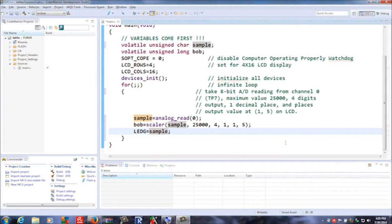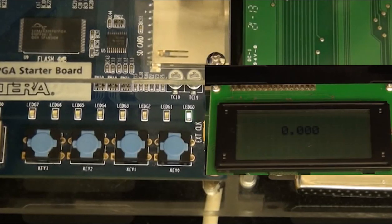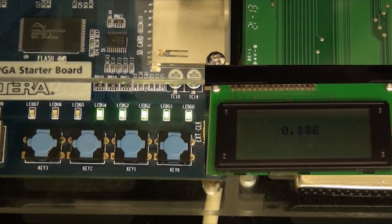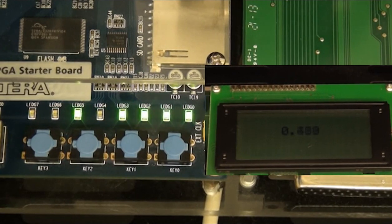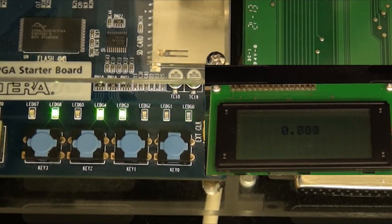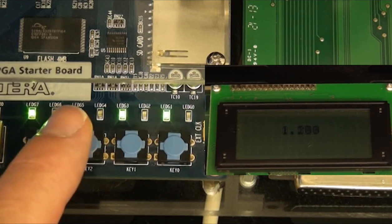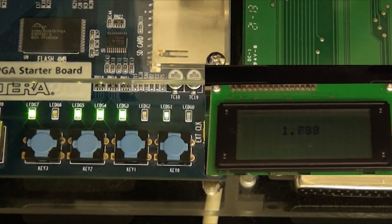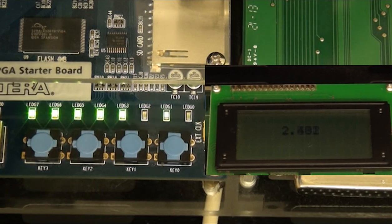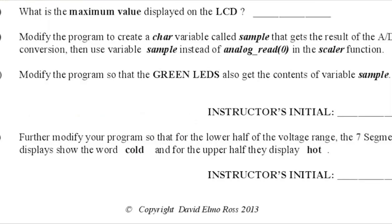As the sine wave starts at the bottom and grows up, you're going to see the LEDs increase in value in binary, and at the same time you will see the same pattern of voltages being displayed by the scalar function on the LCD. The next thing we have to do is modify the program so in the lower half of the voltage range the seven-segment displays show the word cold, and for the upper half they show the word hot.